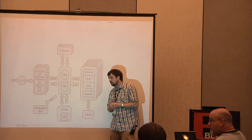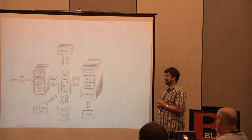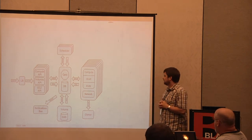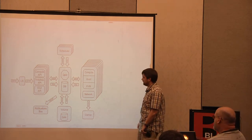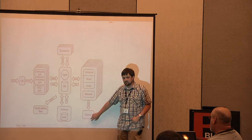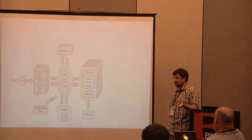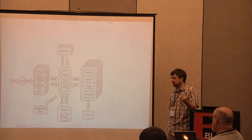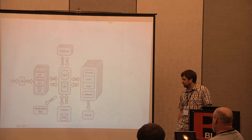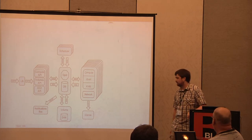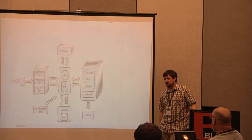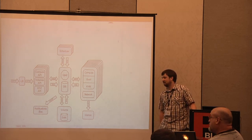Question: where does the Gluster filesystem fit in? One way you could use it is with Glance — Glance stores images on a file system backend, so you could just have that backend be Gluster and dump images into that. That could be your backend store. As for using Gluster with the volume service, I've never set that up and I don't know the volume code very well, so I don't have a great answer there.